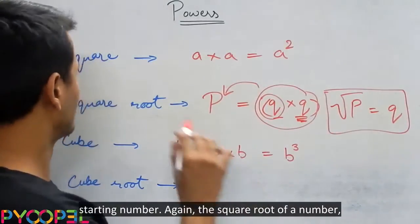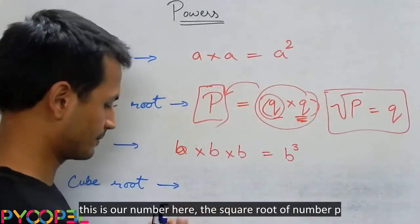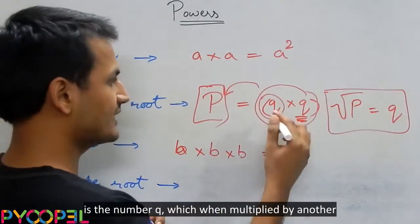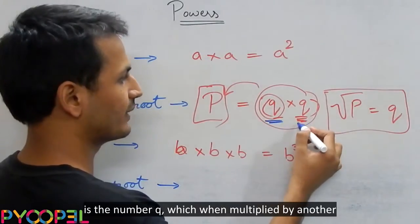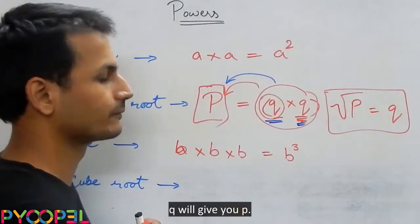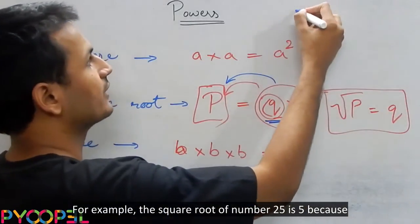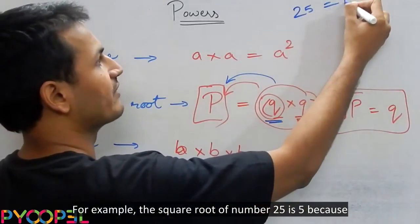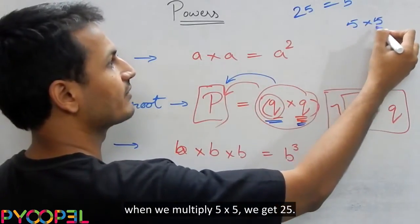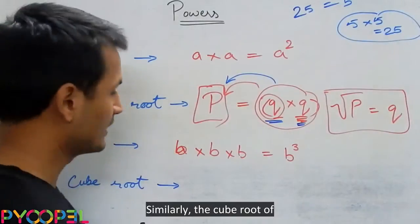Again, the square root of a number — this is our number here — the square root of number P is the number Q which, when multiplied by itself, will give you P. For example, the square root of 25 is 5, because when we multiply 5 by 5 we get 25.